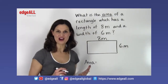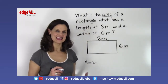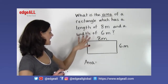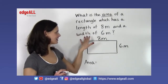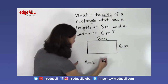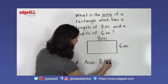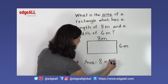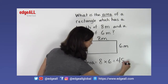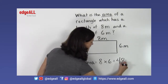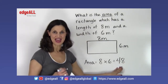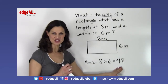Our formula for area is that we multiply the length times the width. So in this case it's going to be 8 times 6, which equals 48.